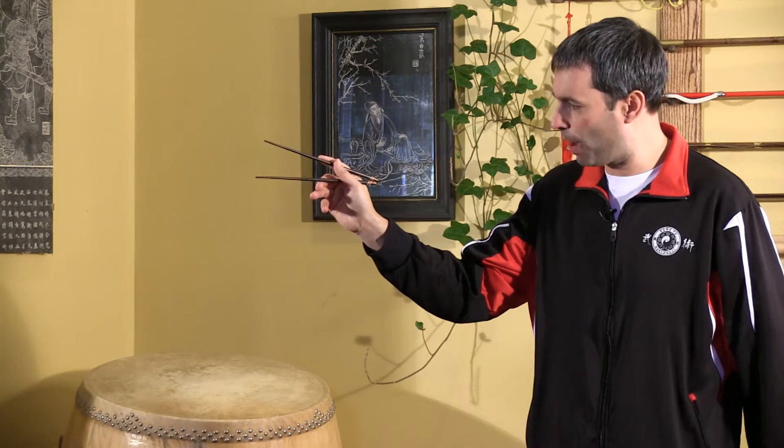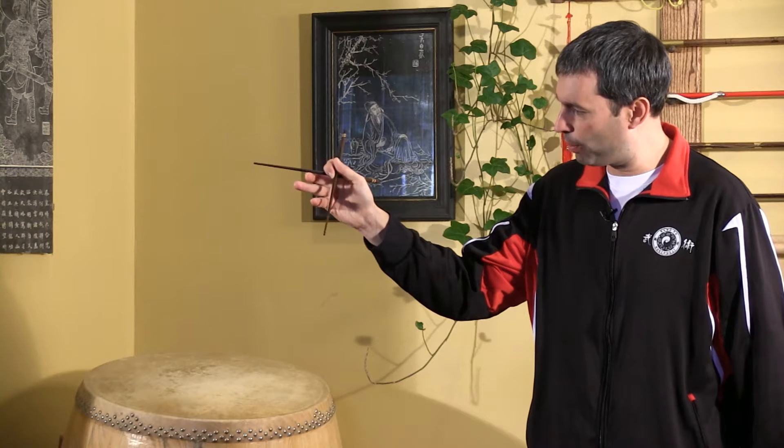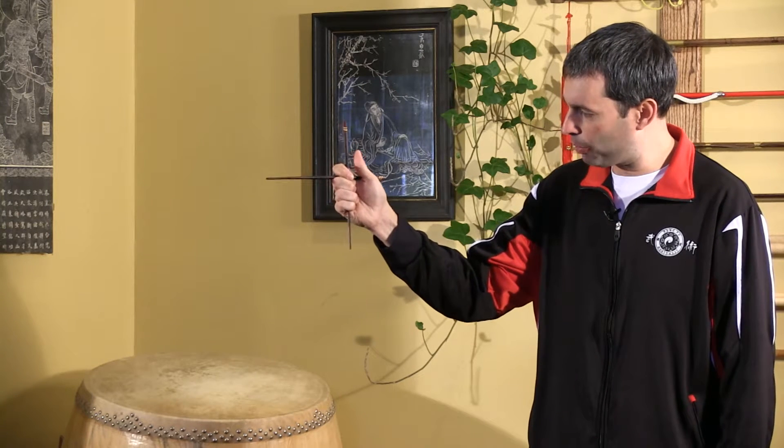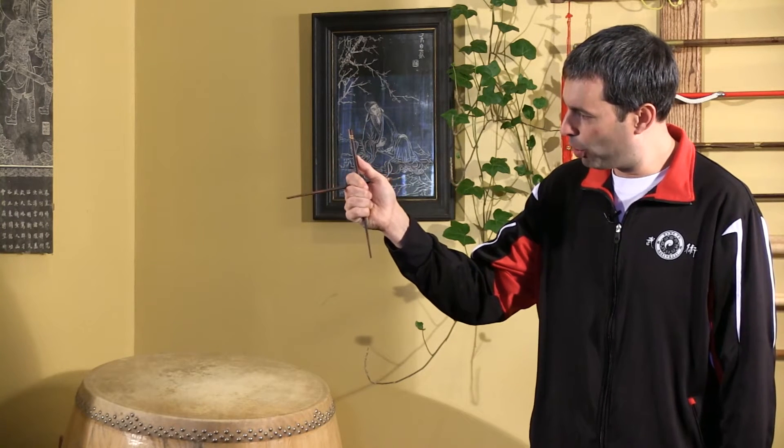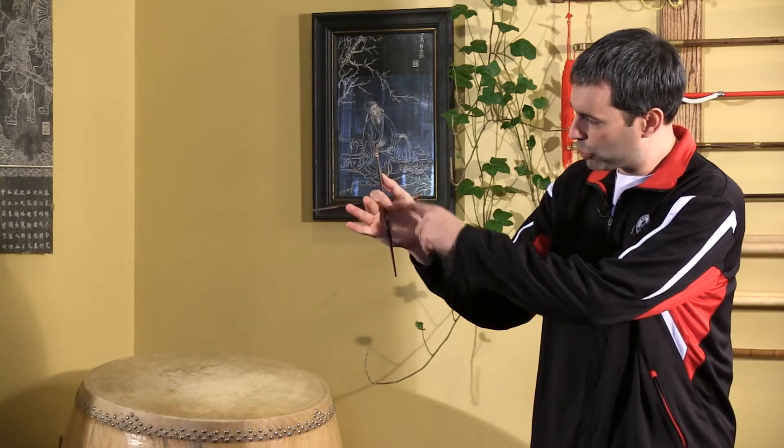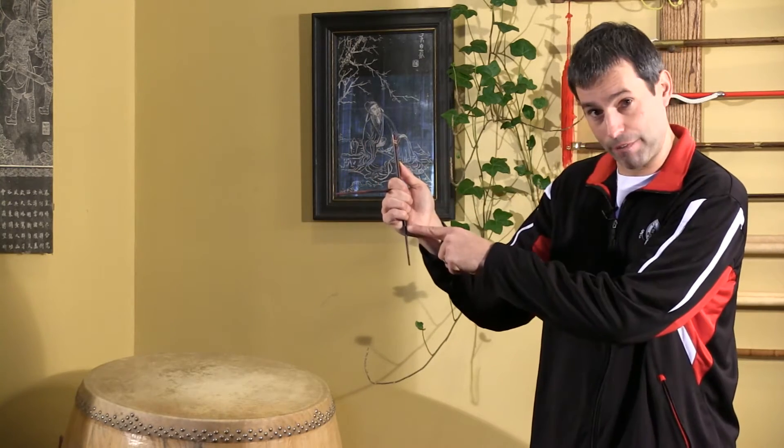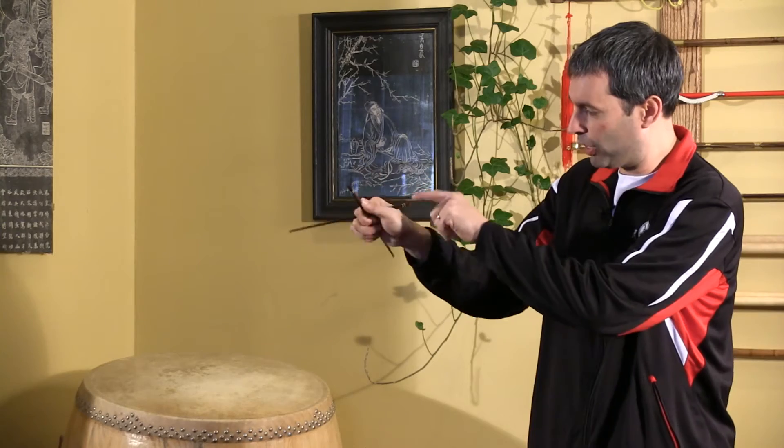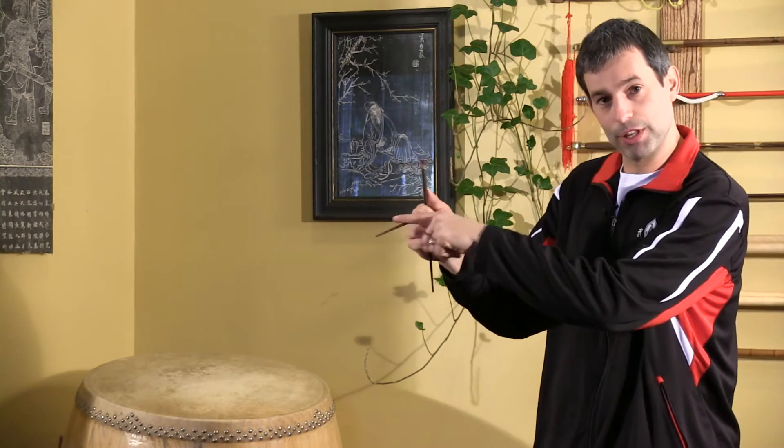First thing we're going to do is start off holding chopsticks like you normally would. Then when you're ready, you're going to take the top stick, slide it down over the bottom stick, use the bottom three fingers to grab, push with your thumb creating pressure here and here that keeps this stick firm, and then a little bit of pressure here and here keeps this stick firm.